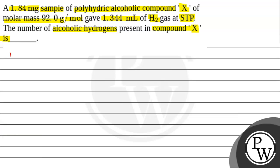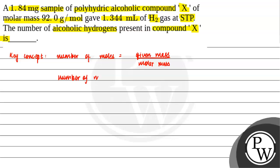Let us first calculate the moles. For that, humeh pata hona chahiye number of moles ka formula. The key concept would be: number of moles is equals to given mass divided by molar mass. Aur volume mein bhi dee hai, so number of moles is equals to volume in liters divided by 22.4 liters per mole.